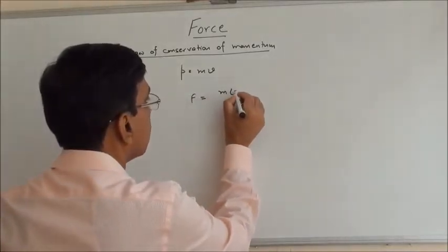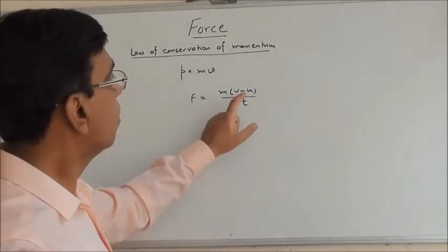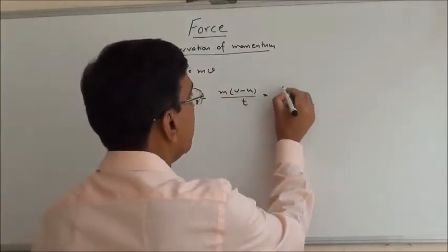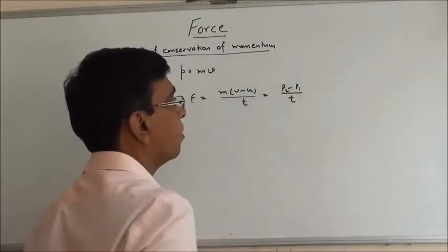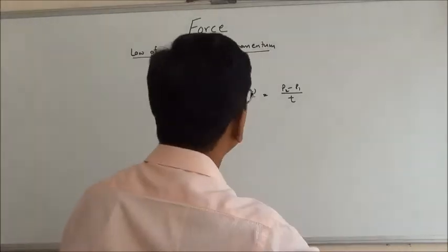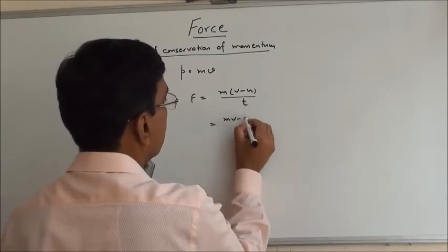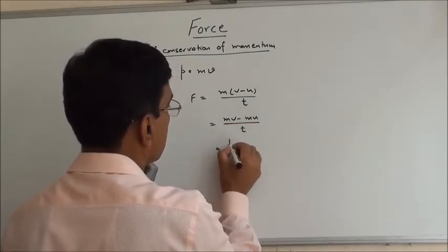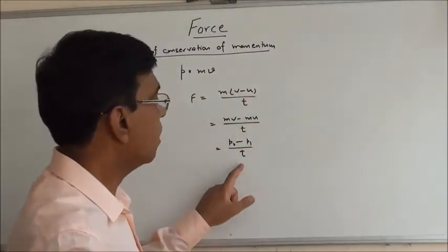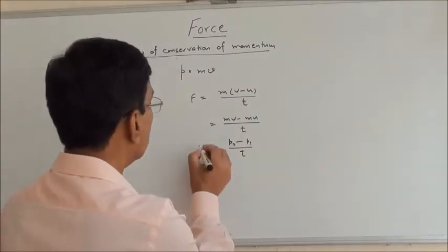Force is mass into change in velocity divided by time, which we also call as change in momentum — p2 minus p1 upon t. Here mv is the final momentum and mu is the initial momentum, so we can write mv minus mu upon t. This is Newton's second law, and t is the time in which the momentum changes from p1 to p2.